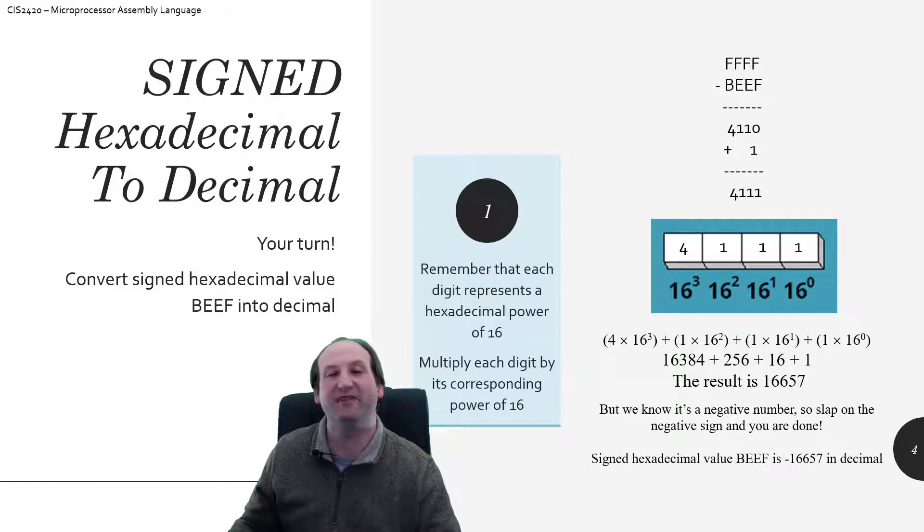So now that I have the positive magnitude of this negative number I'm trying to create, I just do the algorithm where I just add up the powers of 16 for each digit. The number then is 4 times 16 cubed plus 1 times 16 squared plus 1 times 16 to the first power plus 1 times 16 to the zeroth power.